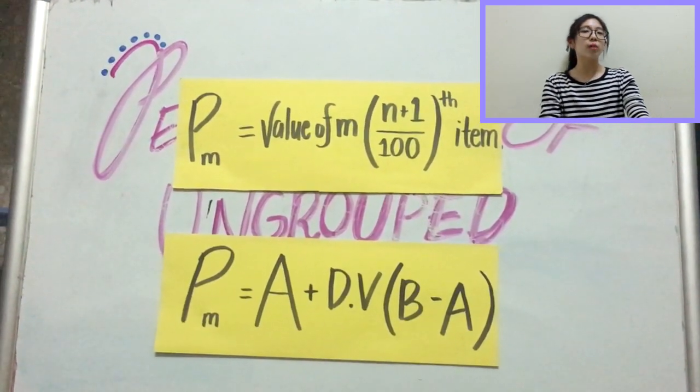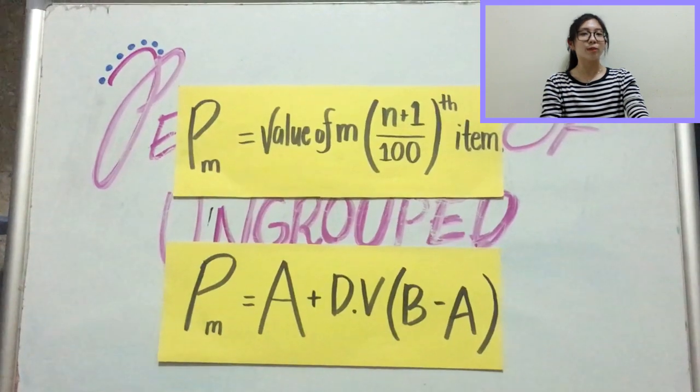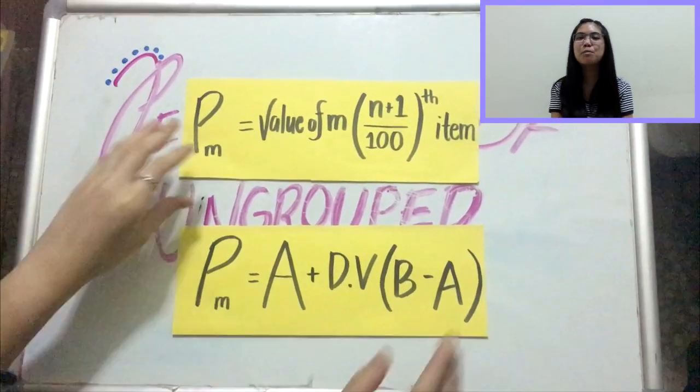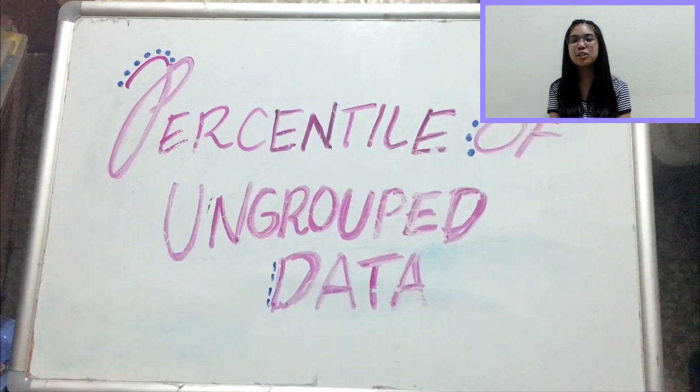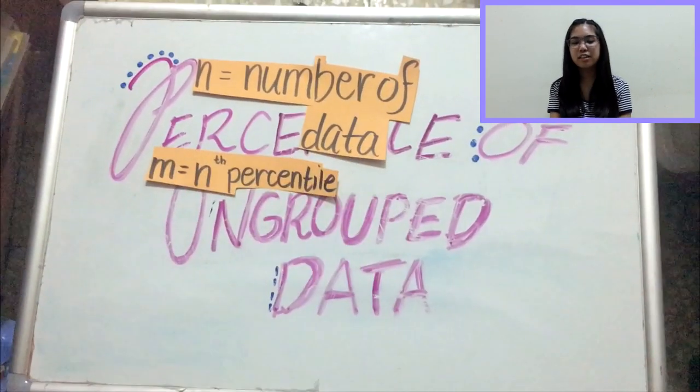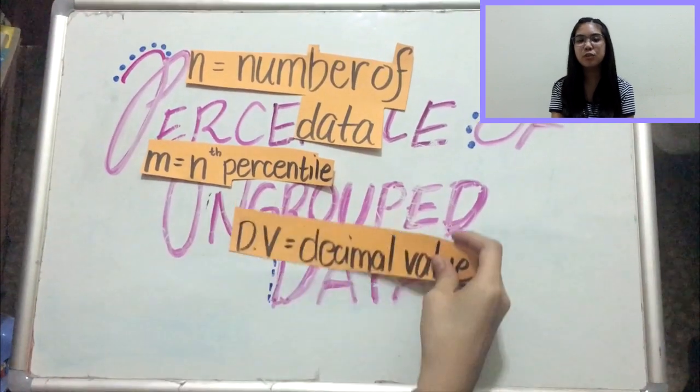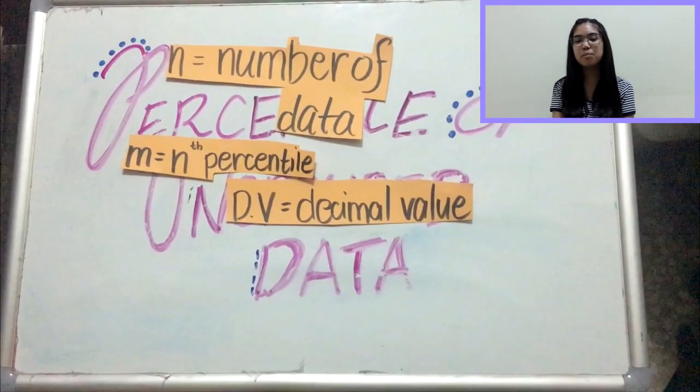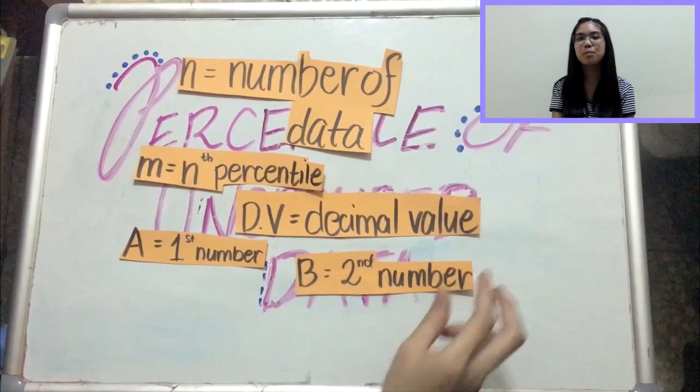We say 100 because we are dealing with percentile. So, what do these variables mean? N means number of data. M means N percentile. DV means decimal value. A means first number. And lastly, B means second number.